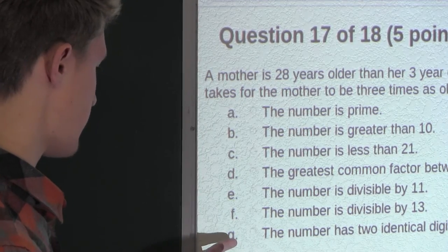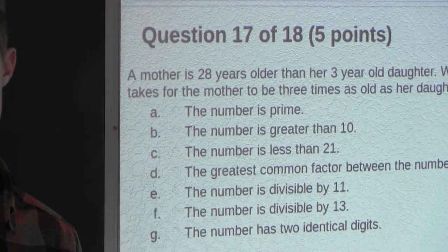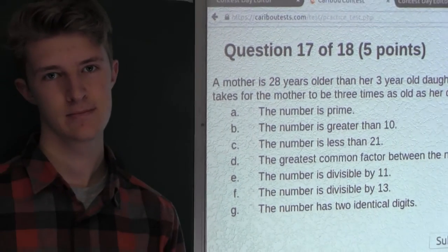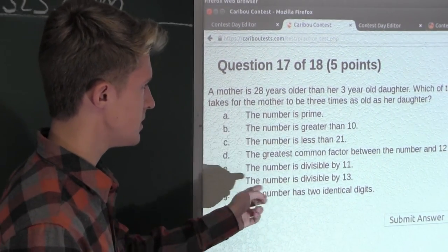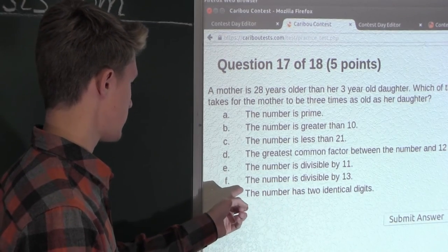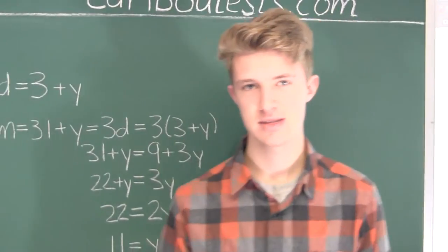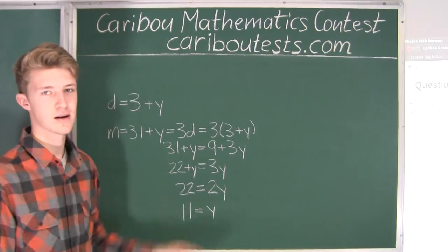So now, finally, option G, the number has two identical digits. Well, that's true, because 11 has the two digits, 1, 1. Okay. Therefore, the only option or the only statement which is false is from option F, the number is divisible by 13. If you'd like to know more about this contest, please feel free to visit our website at cariboutests.com.